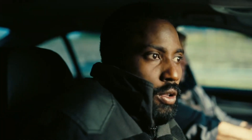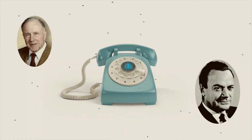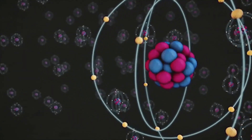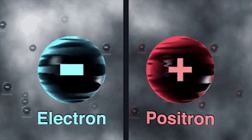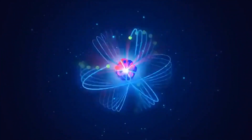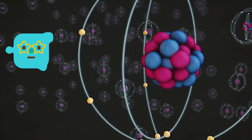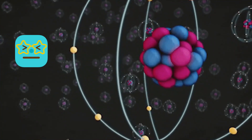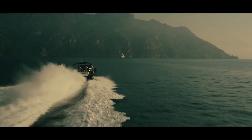There is also a hypothesis called the one-electron universe postulate, proposed by John Wheeler in a phone call to his friend Richard Feynman. It says that hypothetically, all electrons and positrons are actually manifestations of a single entity moving backwards and forwards in time. It sounds strange, but don't think too hard about it — it is just a hypothesis after all.